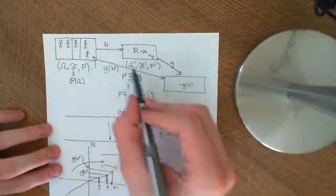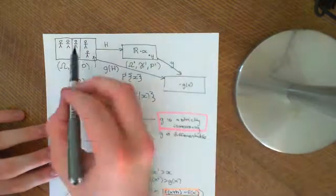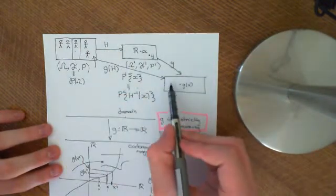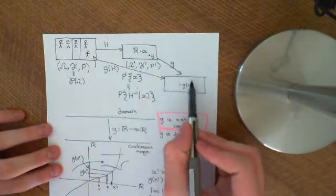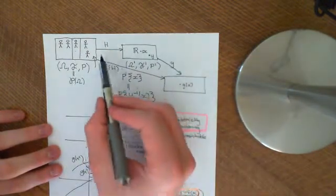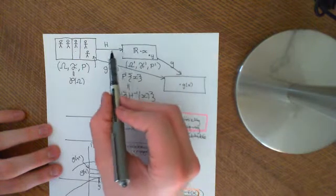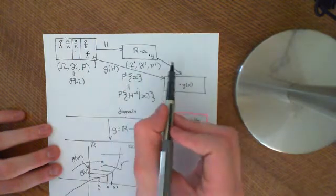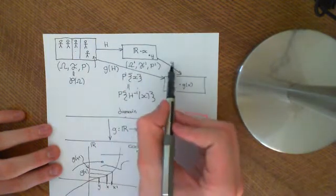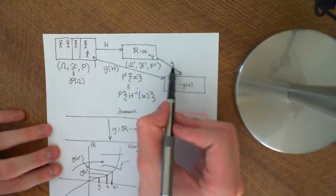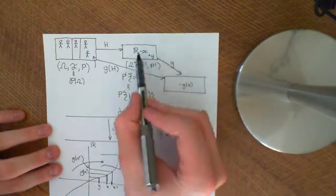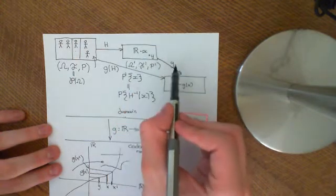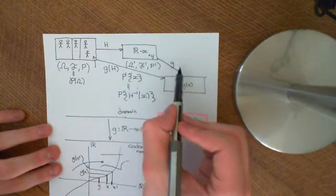This is a new random variable from our abstract probability space to the real line, which we defined using the old random variable H and this function g, which took every real number and mapped it onto a new real number.